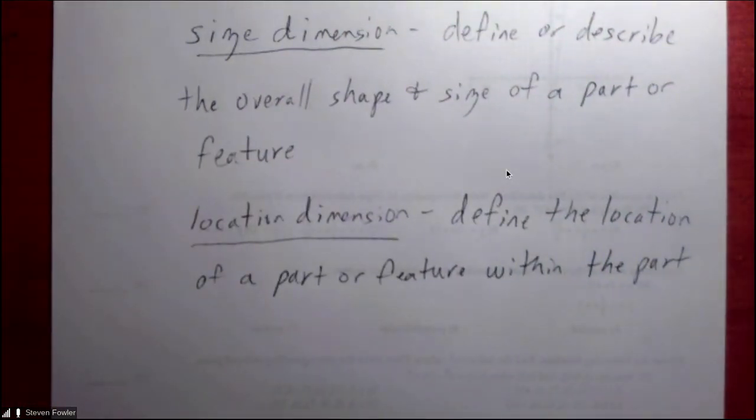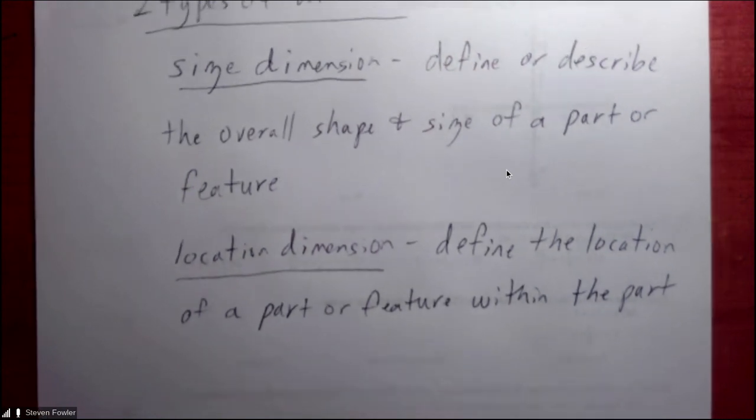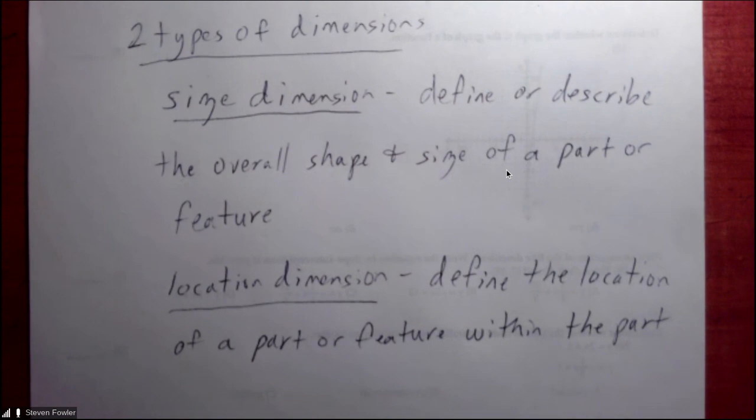And so we've talked about in SolidWorks, because we're learning SolidWorks, that there are two ways you can define a sketch. One is through smart dimensions, and the other is through the geometry. And so when you're putting a smart dimension within a SolidWorks part or object or file,